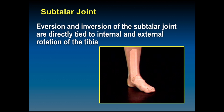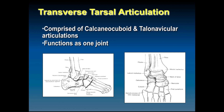If there is an injury to the ankle resulting in loss of range of motion, or the subtalar joint, then gait will be abnormal until that motion is restored. The transverse tarsal articulation is comprised of the calcaneal cuboid and talonavicular articulation, and it functions as one joint. These articulations are shown with a circle.